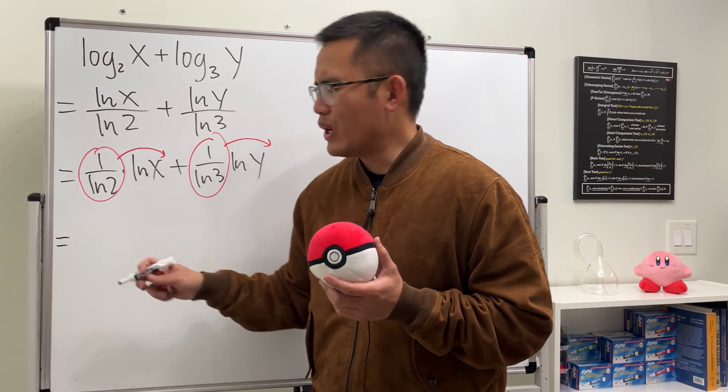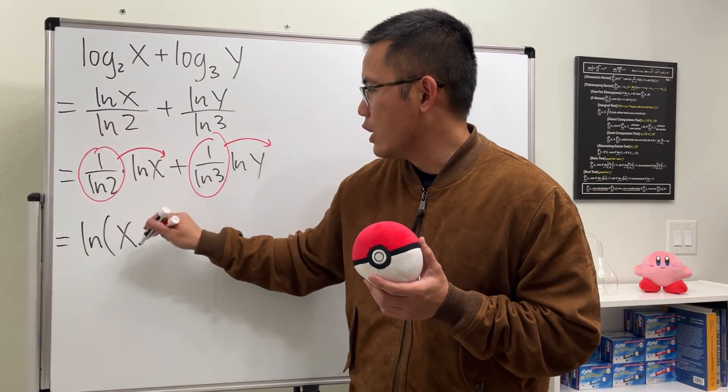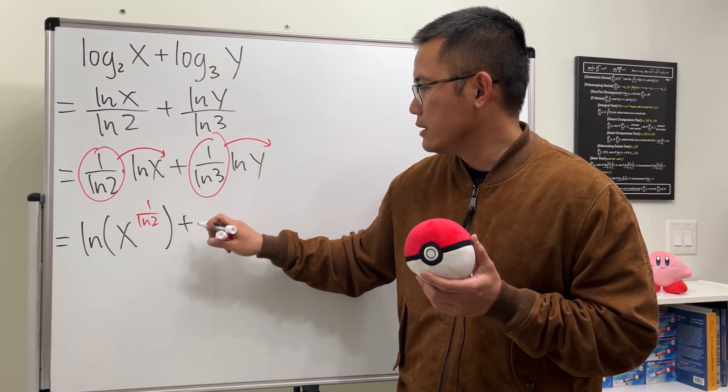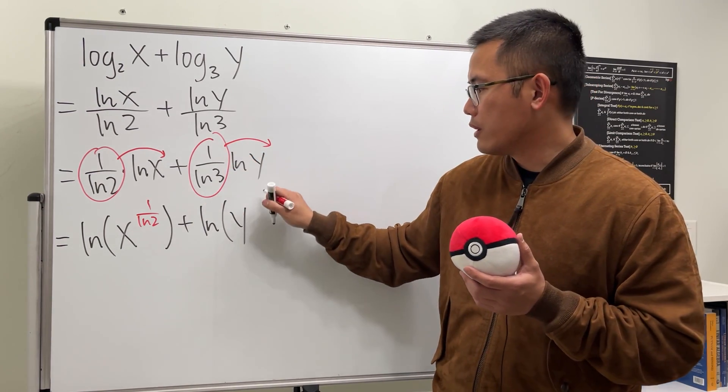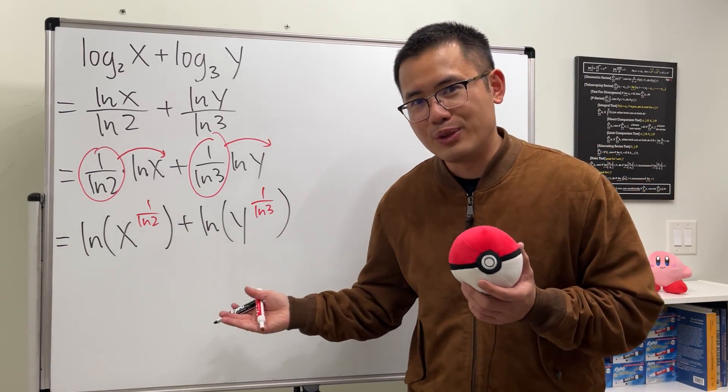So for the first one, we are really just going to get ln of x to the 1 over ln 2 power, and then we are adding this with ln of y raised to the 1 over ln 3 power.